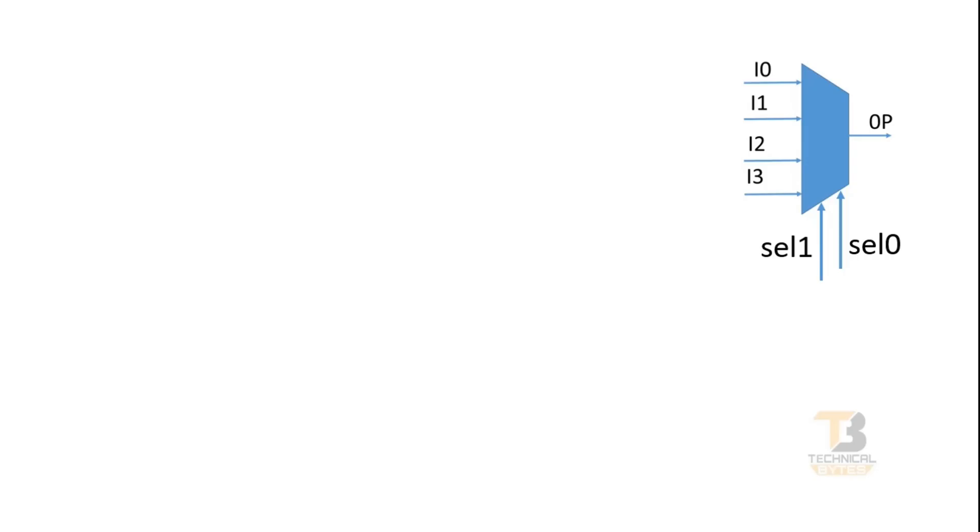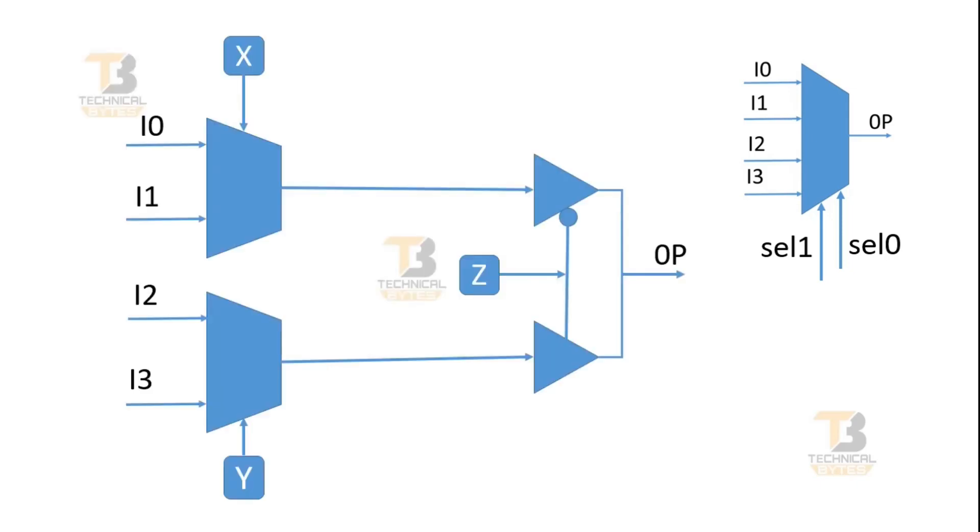Friends, the challenge is on your screen. Here you are seeing a 4x2 one multiplexer. It has four inputs i0, i1, i2, i3, and two select lines select one, select zero, and one output OP. I have implemented this 4x2 one multiplexer with the help of two 2x2 one multiplexers and two buffers.